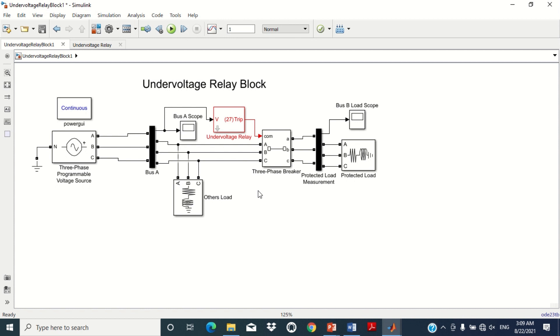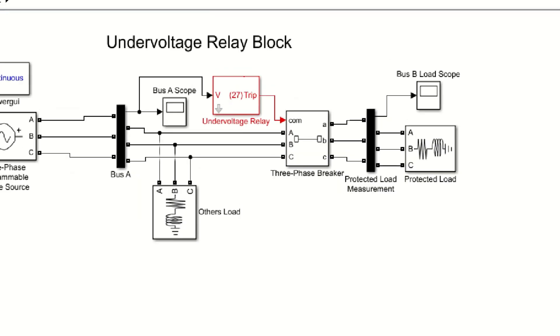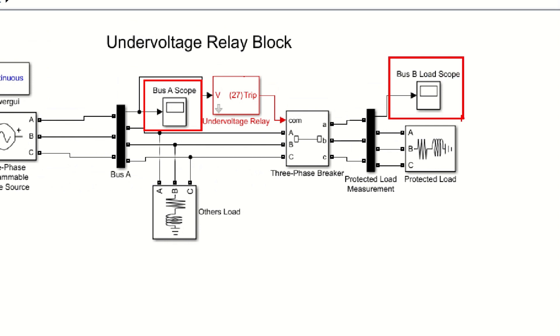Two scopes are used in this model. Scope A is used to measure the voltage at Bus A, whereas Scope B is used to measure the voltage at Bus B.